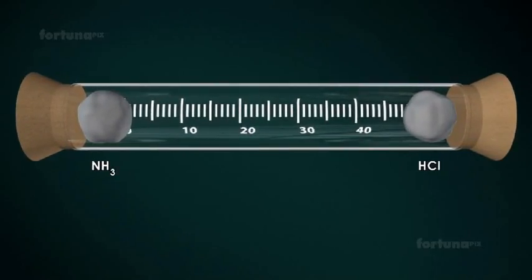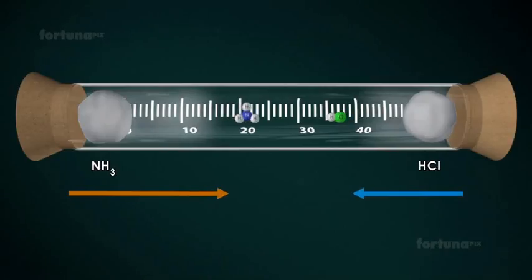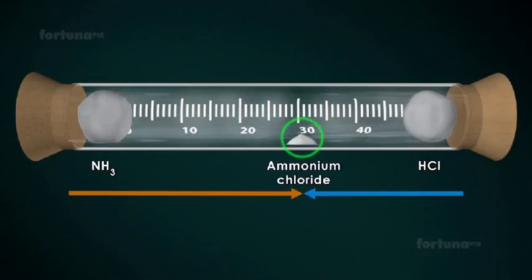Inside the glass tube, gases from the two solutions will begin to move in opposite directions to each other. After some time, Ammonia gas and HCl will meet and react to form a white solid Ammonium Chloride.